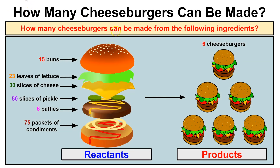Let's jump right in and look at an example. Suppose we're going to have a barbecue and make some cheeseburgers. We have a list of ingredients: 15 buns, 23 leaves of lettuce, 30 slices of cheese, 50 slices of pickles, 6 patties, and 75 packets of condiments. The question is: how many cheeseburgers can be made from these ingredients?